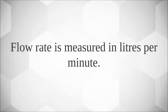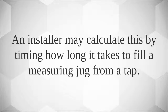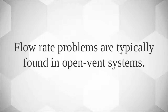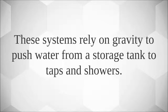Flow rate is measured in liters per minute. An installer may calculate this by timing how long it takes to fill a measuring jug from a tap. Flow rate problems are typically found in open vent systems.